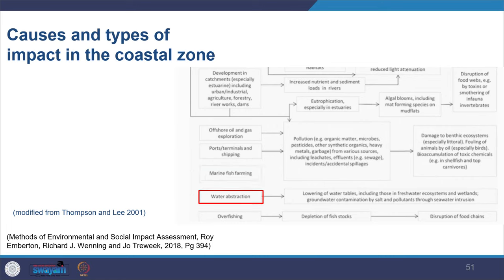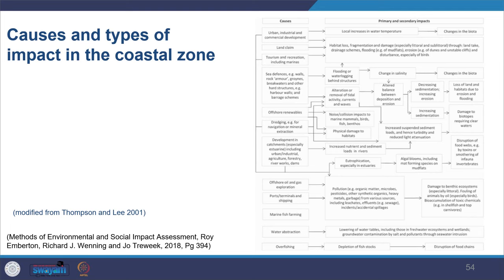Water abstraction leads to lowering of the water table, including in freshwater ecosystems and wetlands, and causes groundwater contamination by salt and pollutants through seawater intrusion. Overfishing is another cause that leads to depletion of fish stocks and disruption of the food chain. These represent the range of different impacts from different sources in coastal areas.